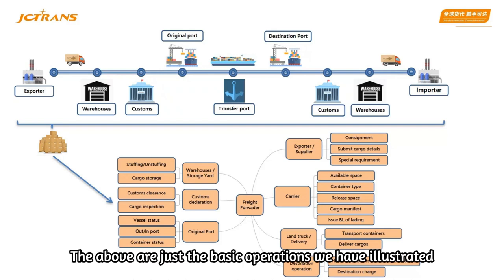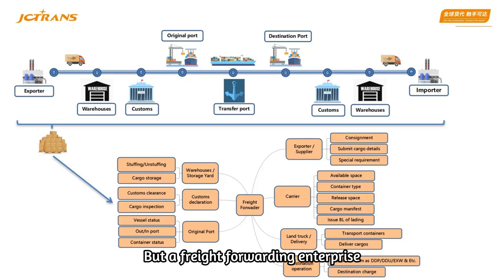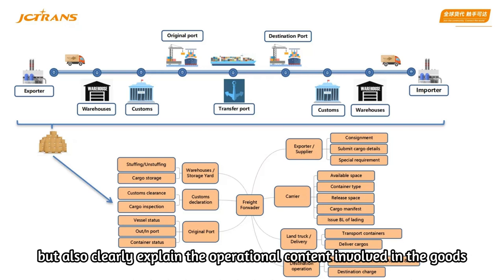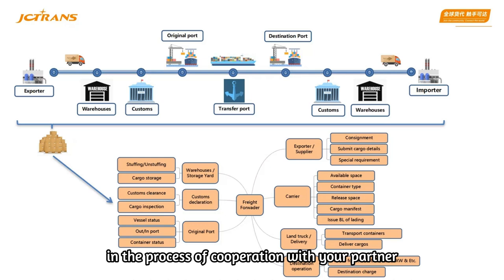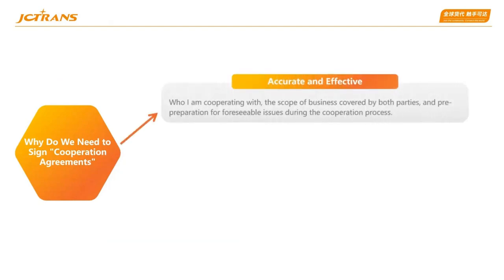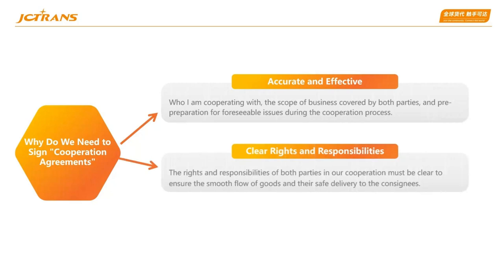The above are just the basic operations illustrated. But a freight forwarding enterprise not only needs to understand the information of the goods, but also clearly explain the operational contact involved in the goods during cooperation with a partner. Then why do we need to sign cooperation agreements? For accurate and effective collaboration: who you are cooperating with, the scope of business covered by both parties, and pre-preparation for foreseeable issues during the cooperation process. Clear rights and responsibilities of both parties must be established to ensure the smooth flow of goods and their safe delivery to the customer's needs.